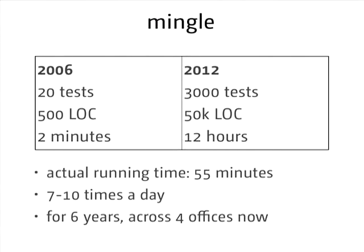Between moves, we moved offices across four continents and four offices and the tests continued running. Every time we moved an office, the tests were down for one day. Then when we got back, the first thing we'd do before starting production code was get the builds up and running. Once they were green, we'd start writing code again and the development cycle would begin.